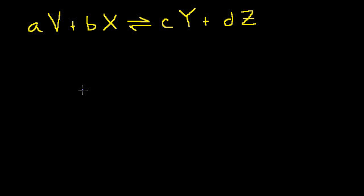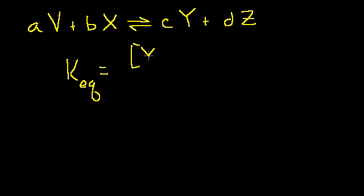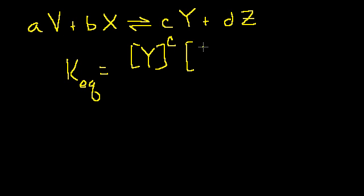Let's see if we can develop some intuition as to why the equilibrium constant equation looks the way it does. As a review, the equilibrium constant is the concentration of molecule Y raised to its coefficient power — or raised to the number of moles if we think of these as molar ratios — times the concentration of molecule Z to the D power.